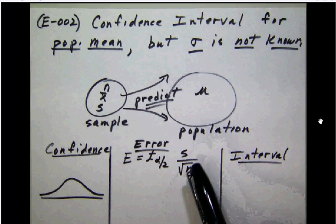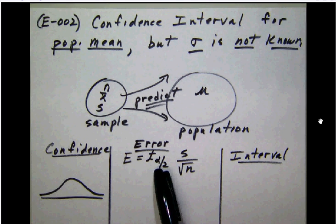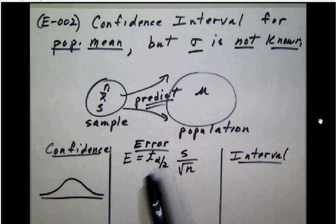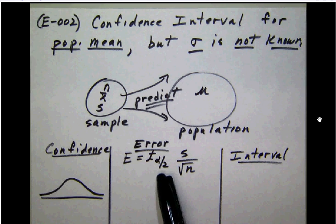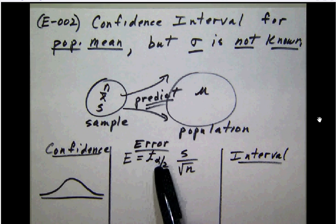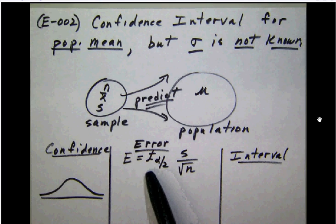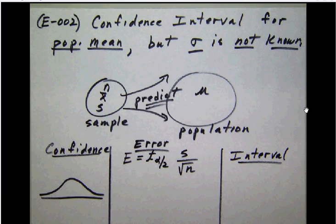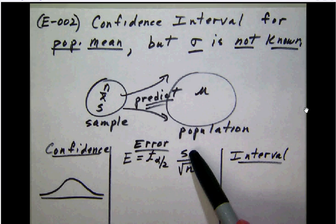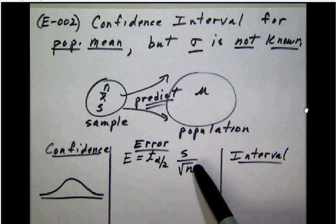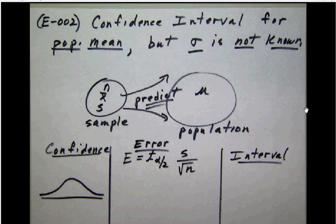So like before we had a z alpha over 2, now we have a t alpha over 2. Notice the formula has an s for the sample standard deviation and the square root of n as we did before.